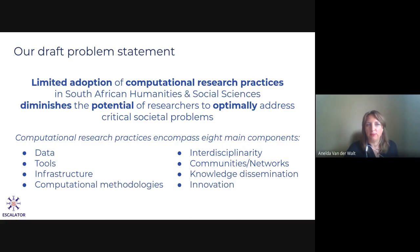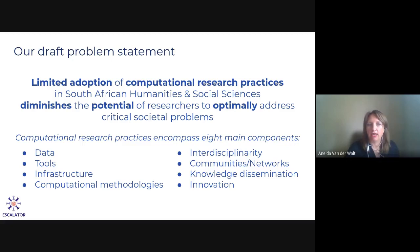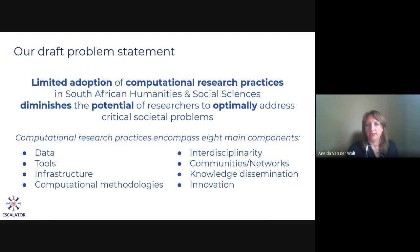Basically what we want to do is help people adopt computational research practices to improve their potential to impact and optimally address critical societal problems in social sciences and humanities. In doing this, we will have to look at how people are using data, what tools they're getting access to and training in, and what's being used in the communities. We'll also look at infrastructure, methodologies, and will focus a lot on interdisciplinarity — helping people bridge disciplines and learn from each other and from communities where computational skills are already more embedded, while growing communities, networks, and supporting knowledge dissemination and innovation.